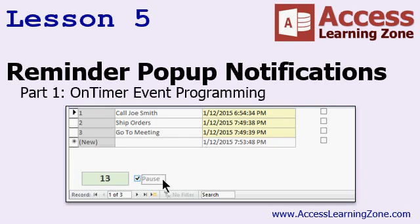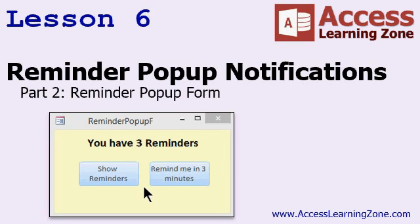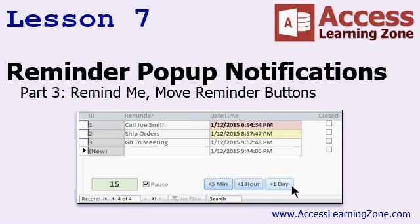In the next couple of lessons, we're going to learn how to make event pop-up notifications. We'll make a list of reminders with a notification date and time, and then we'll make a form that will pop up automatically and say you've got a reminder in four or five minutes. In Lesson 5, we'll begin by learning how to program the on-timer event. In Lesson 6, we'll build the actual reminder pop-up form. In Lesson 7, we'll work on the Remind Me button — so you can say Remind Me in 5 or 10 minutes — and the Move the Reminder buttons to move it to tomorrow, next week, and so on.